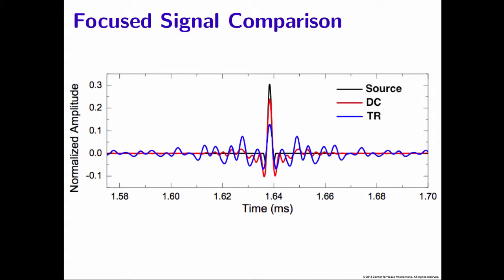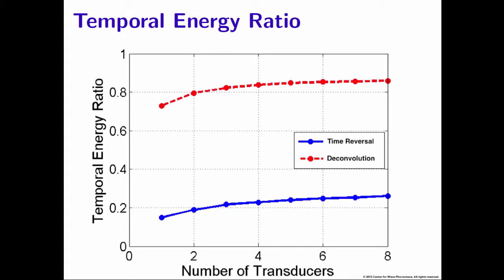To quantify this, we created a window around the time of focus where we had 100% of the energy for the original source impulse, then looked at how much energy was in that window for deconvolution and time reversal. We saw that 70% of the energy was in the window for deconvolution, but only 15% for time reversal due to those significant side lobes. We then re-ran our experiment for multiple transducers to see if deconvolution stayed consistently better, and it did — even increasing the number of transducers, deconvolution stayed consistently better than time reversal in its ability to temporally focus.